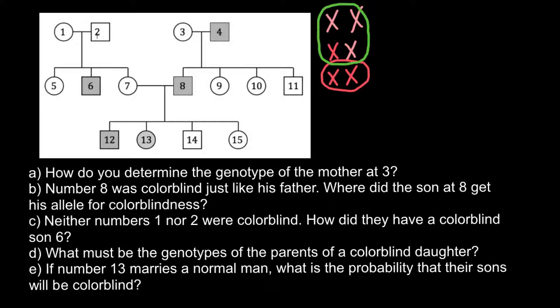Males may have two genotypes and two phenotypes. One is a normal X chromosome with a Y chromosome, which defines maleness — that is the normal phenotype. The other genotype is one defective X chromosome with a normal Y chromosome, which means the affected phenotype.